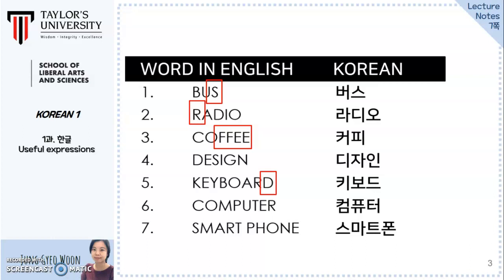Number seven: Smartphone. There are two things to look into. First, the ending consonant T needs a vowel to form a syllable. Second, for 'phone', there is no F sound in Korean and it is replaced with consonant P. So the pronunciation will be Smartphone.